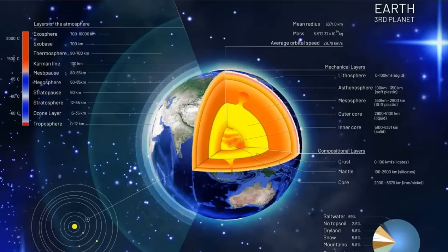The inner core is the hottest part of the planet at about 10,000 Fahrenheit, which is about 5,400 degrees Celsius. This is similar to the temperature of the surface of the sun. The core is believed to consist mostly of an iron-nickel alloy.